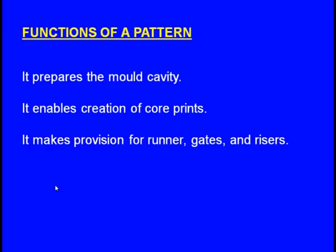The molten metal is initially poured through the sprue, which is the vertical passage. Then it passes through the horizontal passage known as the runner. After filling up the mould cavity, it rises through the riser. The pattern should make provision for the runner, ingates, and the riser — these are the functions of the pattern.